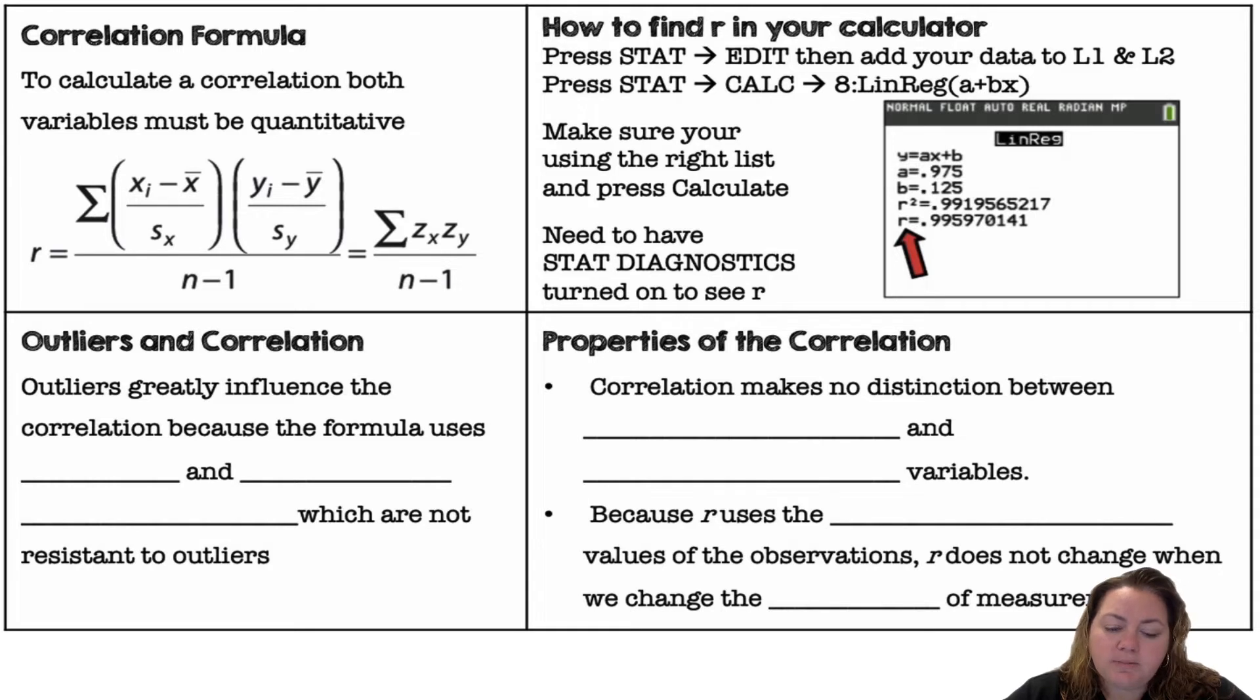Outliers and correlation. Outliers greatly influence the correlation because the formula uses the mean and standard deviation, which are not resistant to outliers.